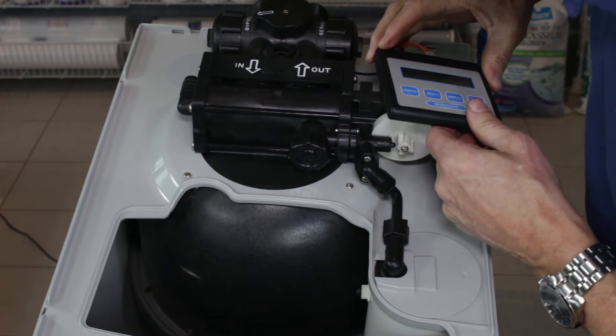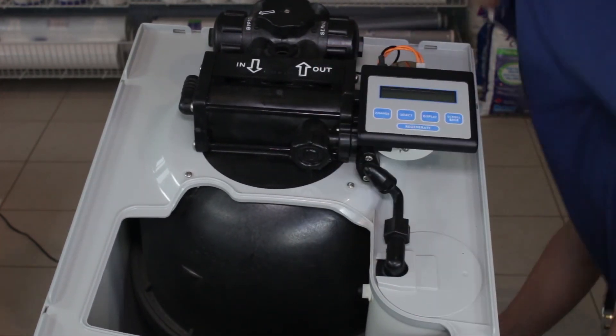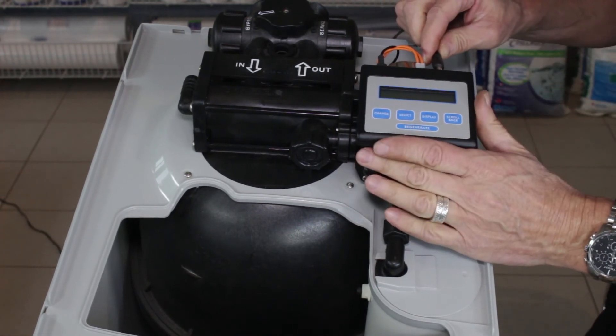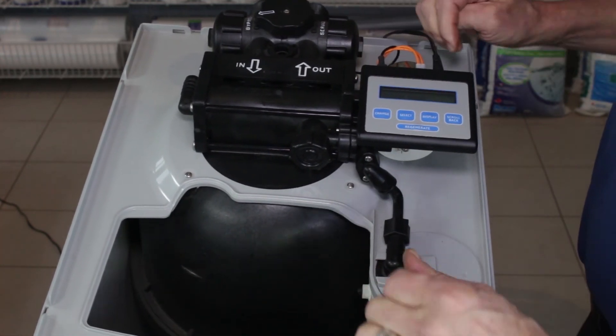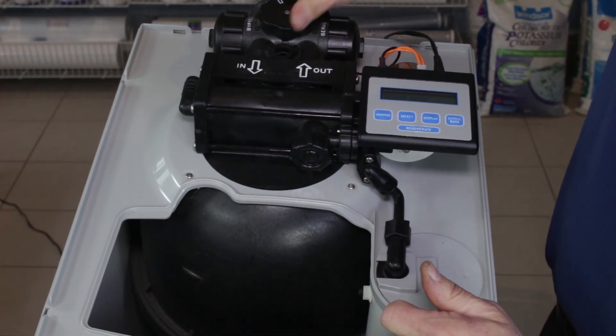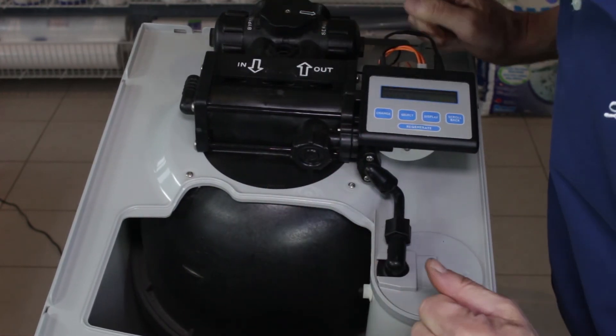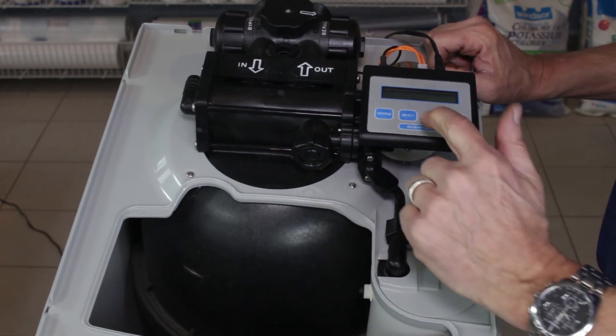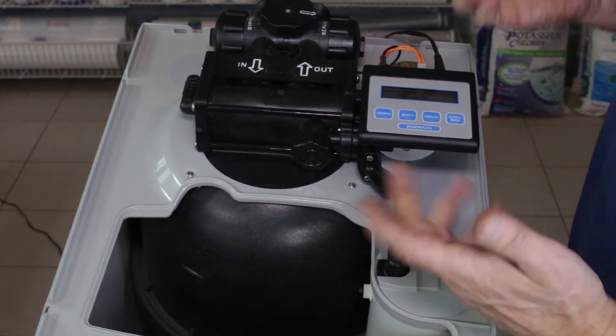All right, and then we'll put the controller back on like so, and we can plug the controller back in. Once we plug it back in, it's going to say going home. Once it gets back to home, then we can open up the bypass valve back into service and check for leaks. Assuming there's no leaks, then we can press the regenerate button, hold it down for five seconds so it regenerates, and after it regenerates you'll have soft water again.